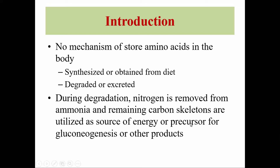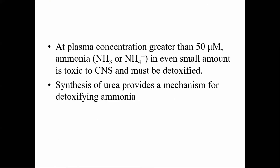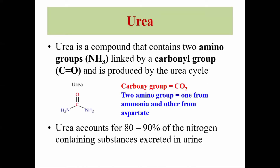The amino groups present in amino acids are released in the form of ammonia. Free ammonia is very toxic to the body, especially to the CNS, so it must be detoxified as much as possible. The synthesis of urea is one of the mechanisms by which ammonia produced during degradation of amino acids is detoxified. Urea is a compound that contains two amino groups linked by a carbonyl group, and it is produced by a cyclic pathway called the urea cycle.